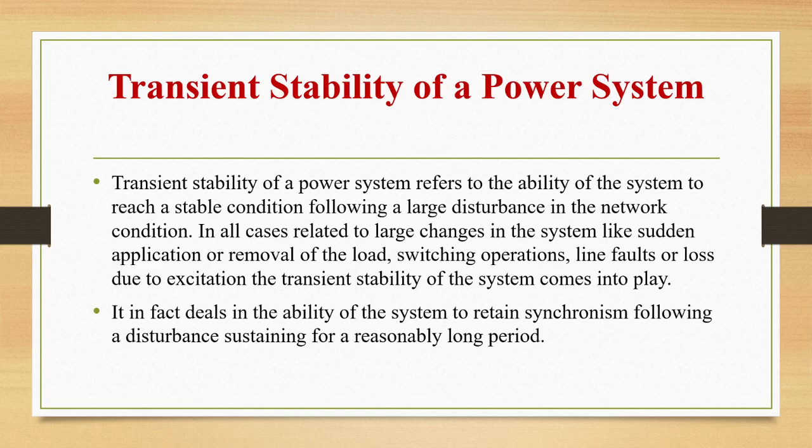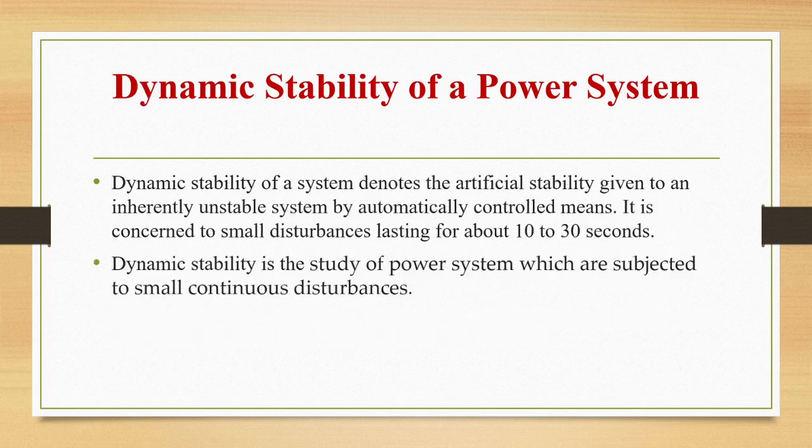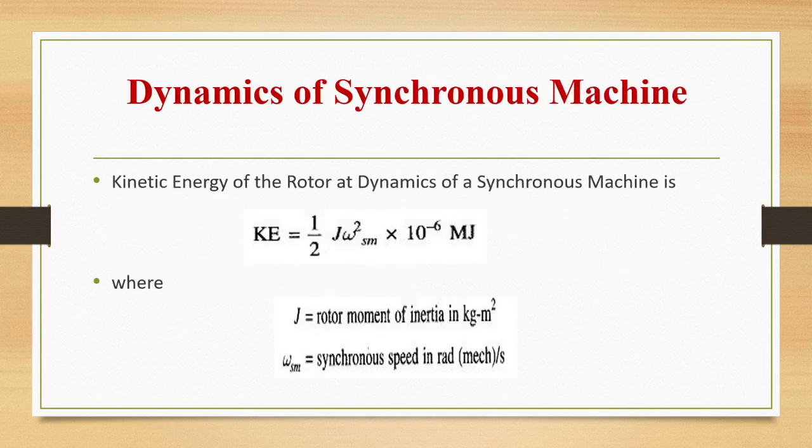Transient stability applies to short periods, while steady state stability applies to long periods. Dynamic stability refers to small continuous disturbances. Dynamic stability of a system denotes the artificial stability given to an inherently unstable system by automatically controlled means. It is concerned with small disturbances lasting about 10 to 30 seconds — it is the study of power systems subjected to small continuous disturbances.